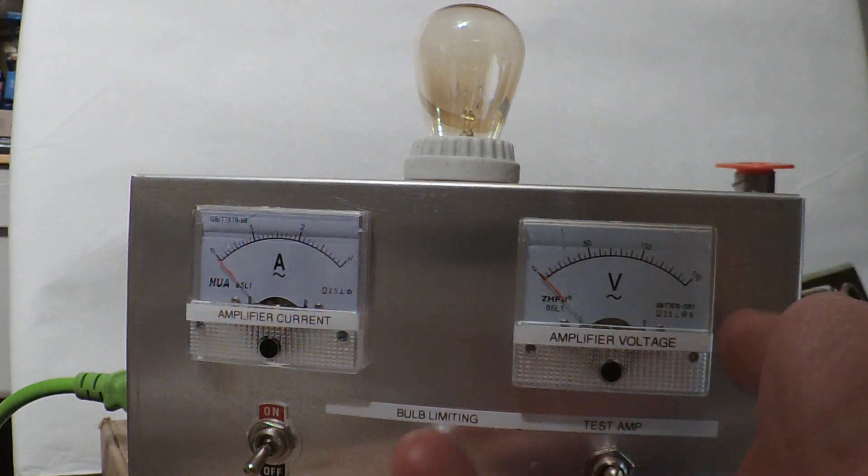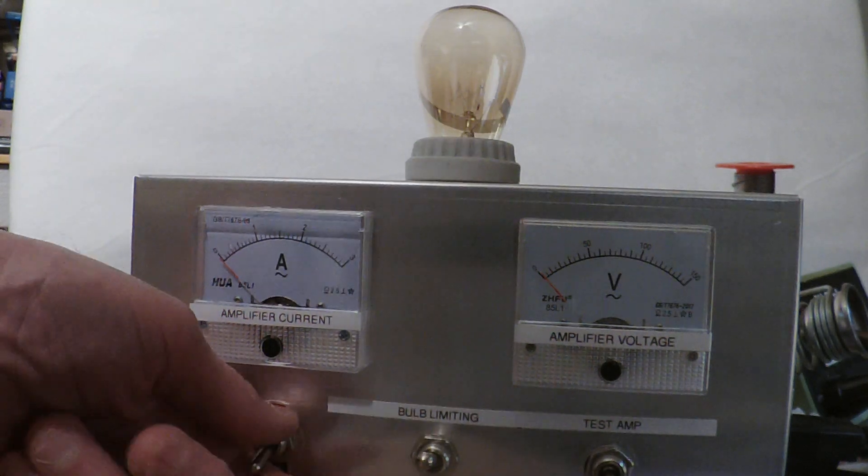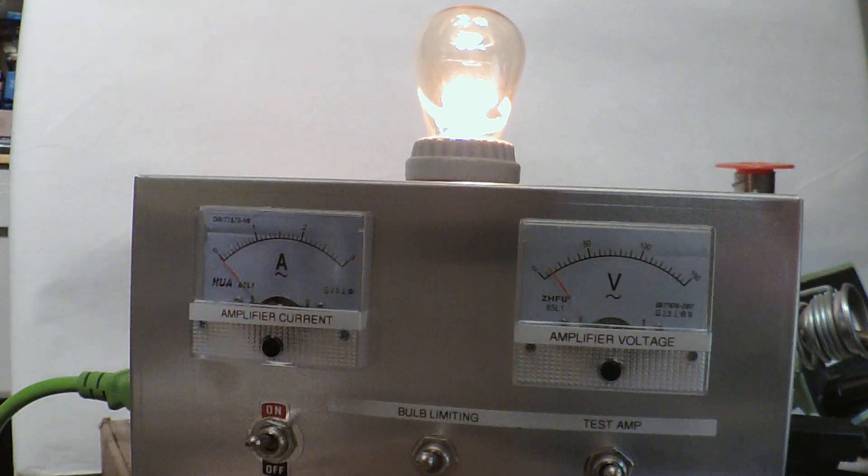So I'm starting with an 11 watt bulb. I start it with bulb limiting in preheat bulb mode. Turn it on, preheat the bulb so it's warm, switch it over to test amp.